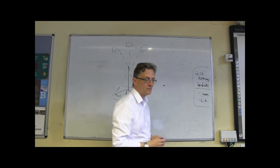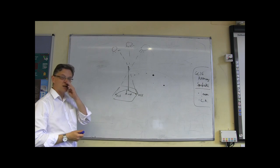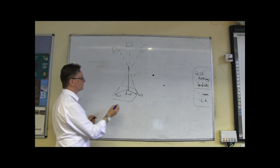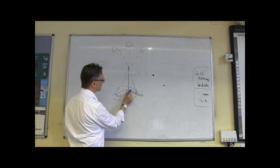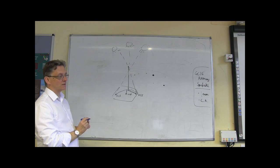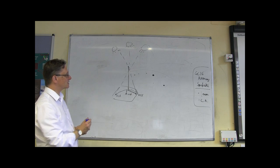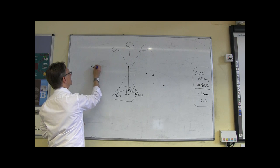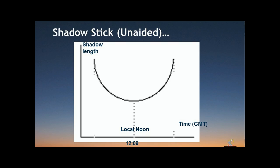The next thing you have to do is measure the lengths of those shadows. So you get a ruler and measure the length of those shadows, and then plot them on a graph — a graph of shadow length against time of day. Pretty obviously what you're going to get is that the shadows will be quite long in the morning and get shorter as the day goes on as the sun gets higher.